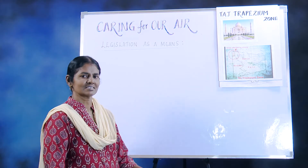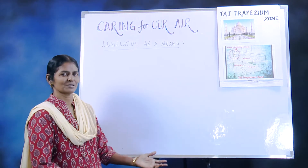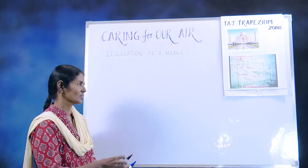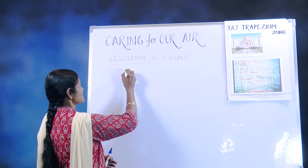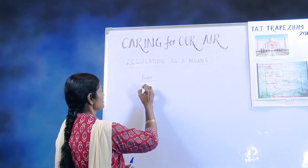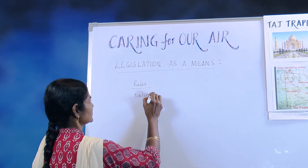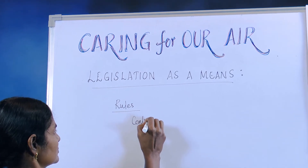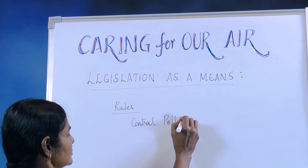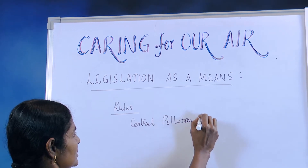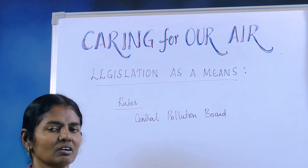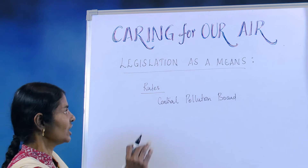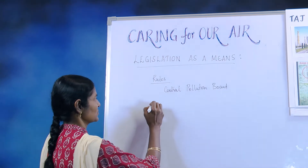As pollution becomes more and more, we need rules and regulations. Initially when pollution was very less, nobody bothered. Then came the rules and regulations put up by the Central Pollution Board. They brought in some norms which all industries, vehicles, and manufacturers had to follow.